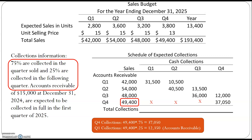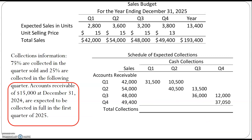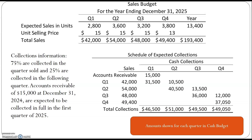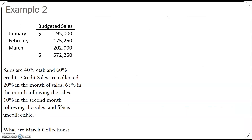That other 25% of quarter four sales would actually be collected in quarter one of the next year, which would be accounts receivable on your budgeted balance sheet. Additionally, our information tells us there was $15,000 in accounts receivable at December 31 of the prior year, and they expect to collect that in the first quarter of the current year, so we add that into our schedule. We can then add up the columns to get our total collections — the amounts shown for each quarter in the cash budget as expected cash collections.